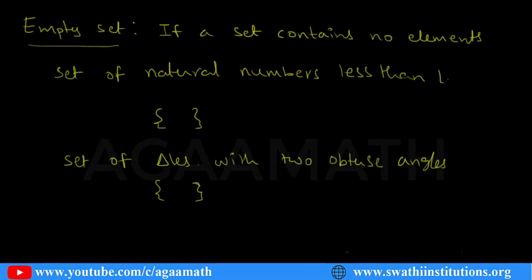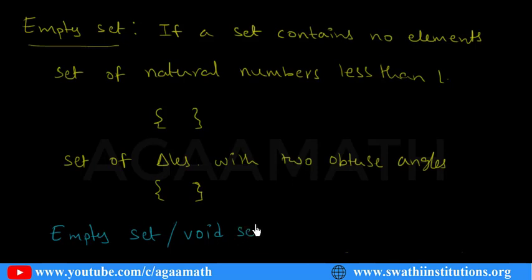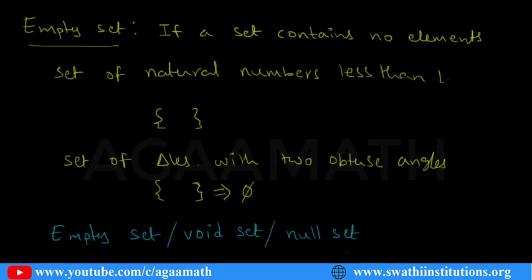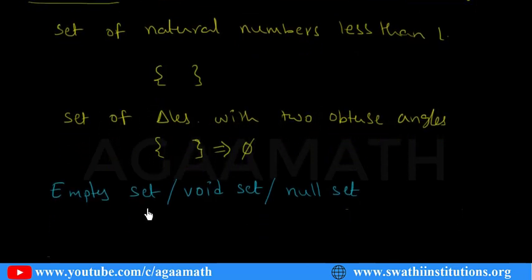You have to remember one thing: an empty set is also called a void set or a null set. Empty set, void set, and null set all have the same meaning. An empty set is denoted with a special symbol — the phi symbol (∅).